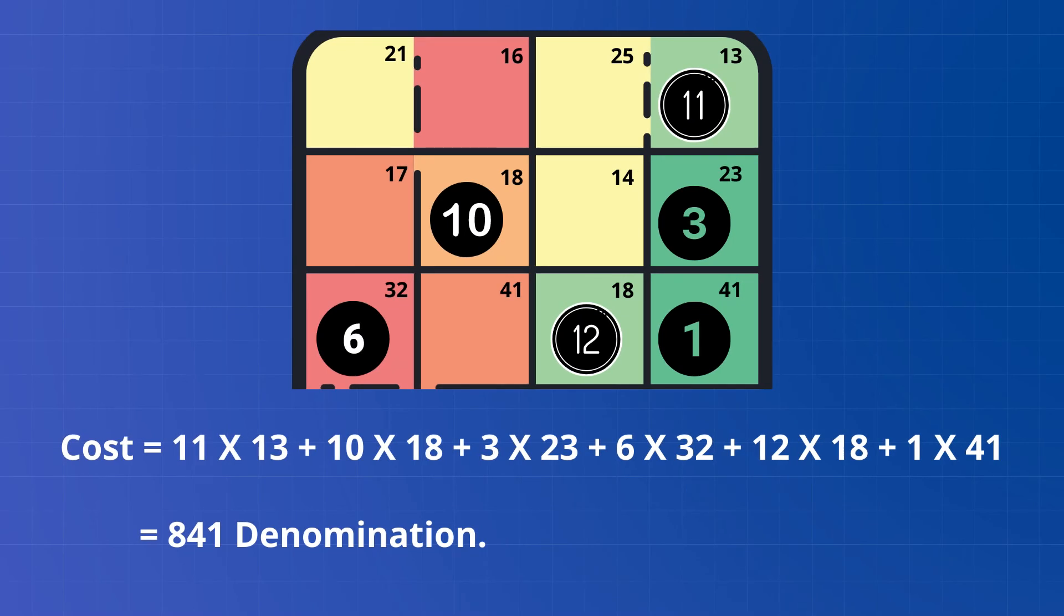So we have our final allocation as you can see here. Now the cost can be calculated with the same method as we have previously used for northwest corner method.